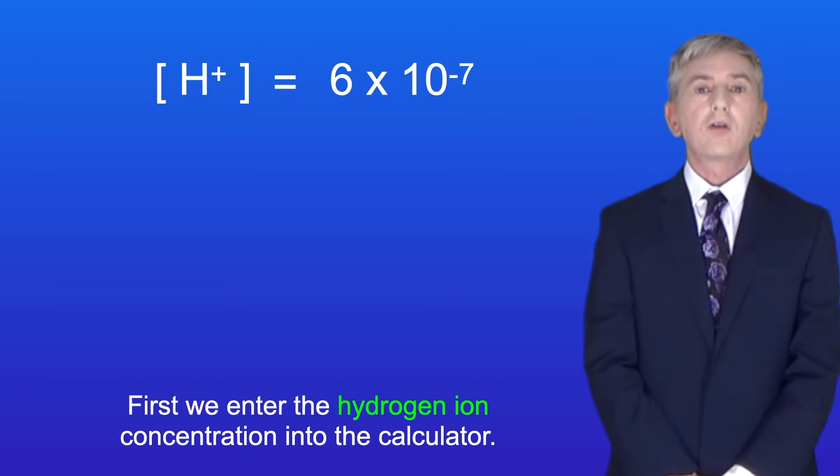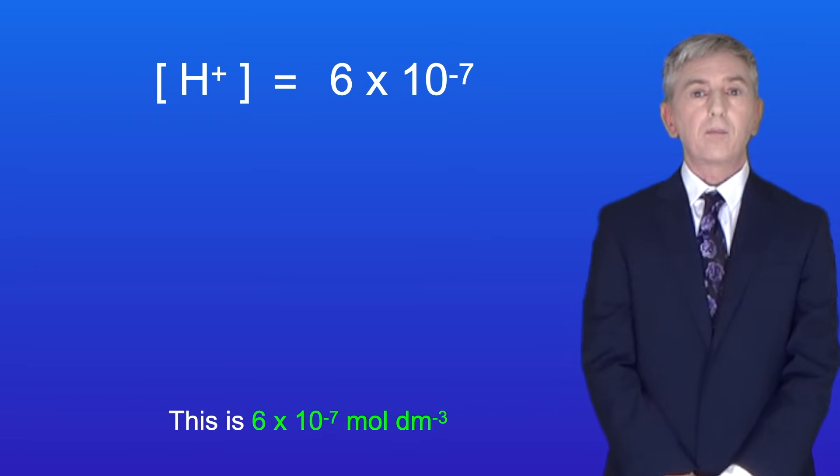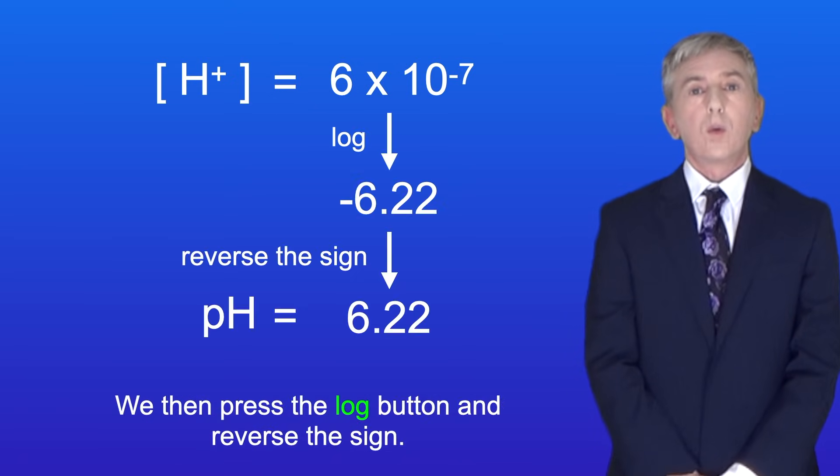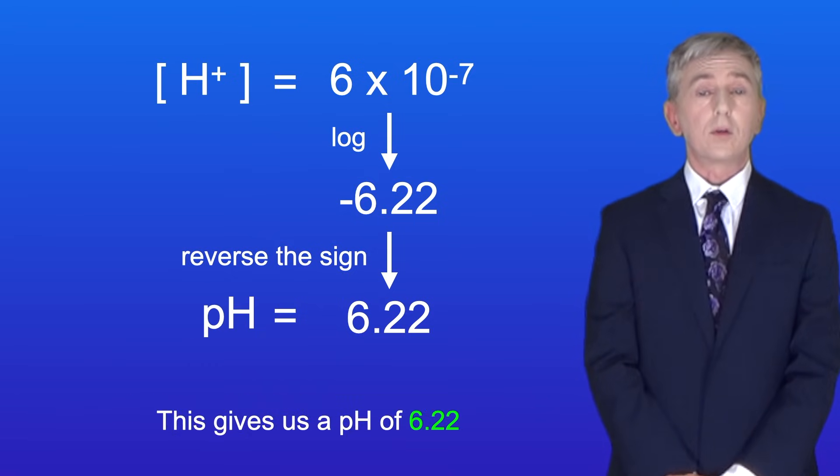Okay, first we enter the hydrogen ion concentration into the calculator. This is 6 times 10 to the power of minus 7. In other words, 0.0000006. We then press the log button and reverse the sign. This gives us a pH of 6.22.